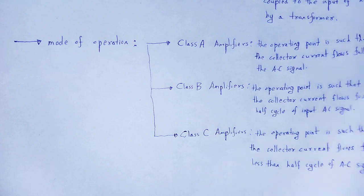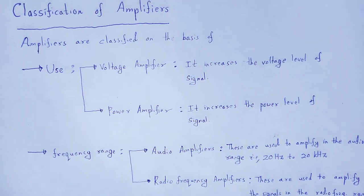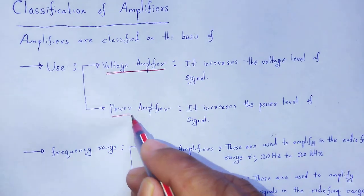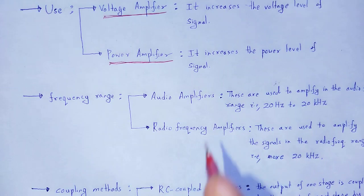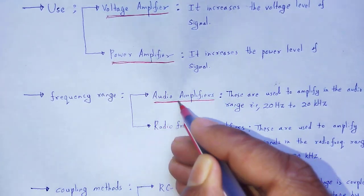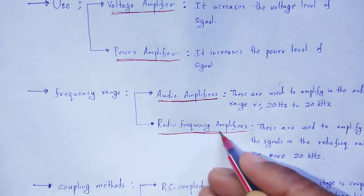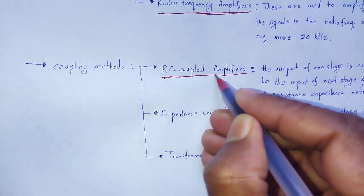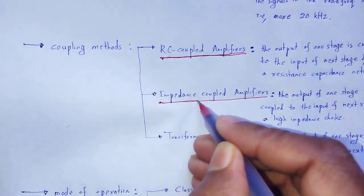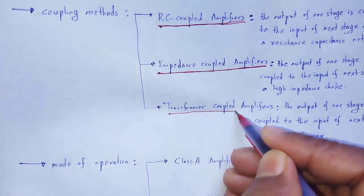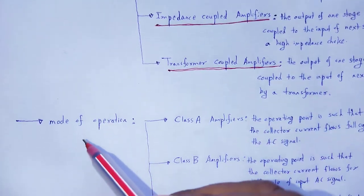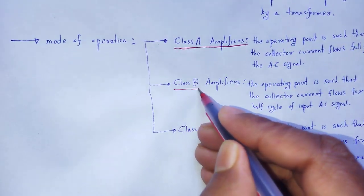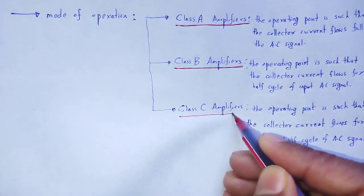With the help of this video lecture, we understand the classification of amplifiers. Amplifiers are classified on the basis of use as voltage amplifier and power amplifier; on the basis of frequency range as audio amplifiers and radio frequency amplifiers; on the basis of coupling methods as RC coupled, impedance coupled, and transformer coupled amplifiers; and on the basis of mode of operation as class A, class B, and class C amplifiers.